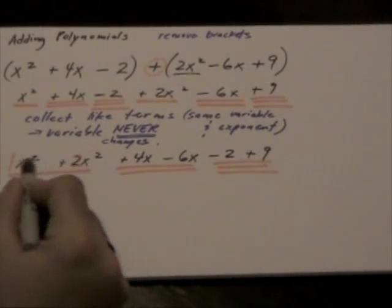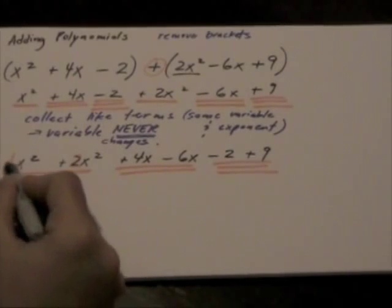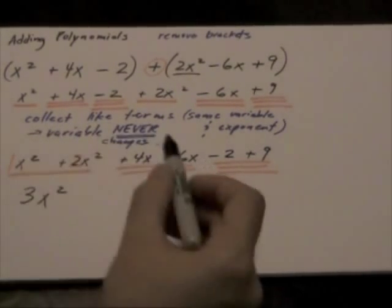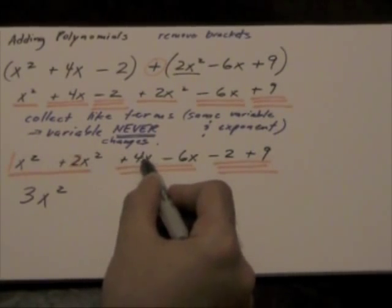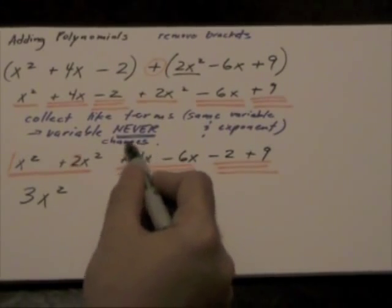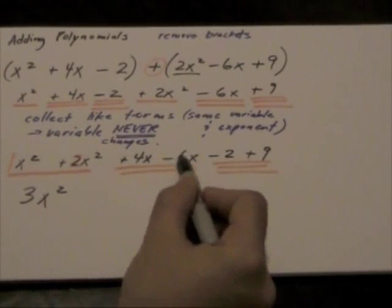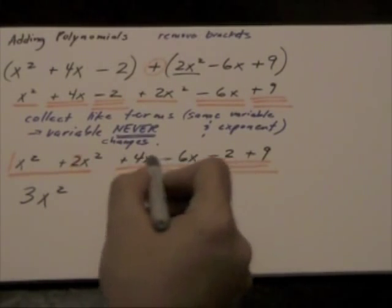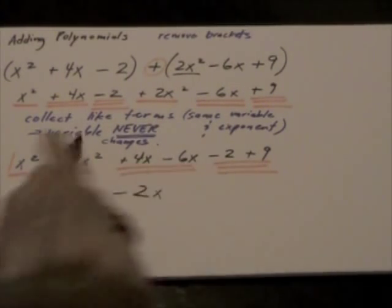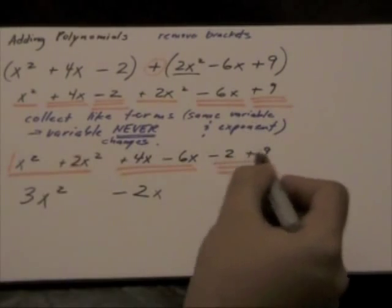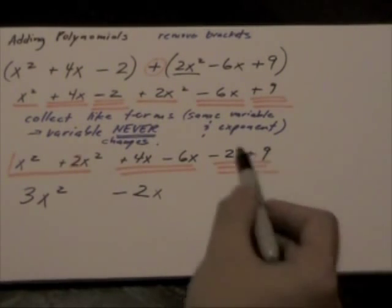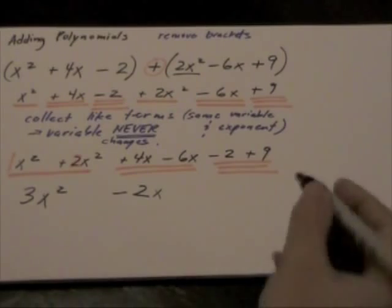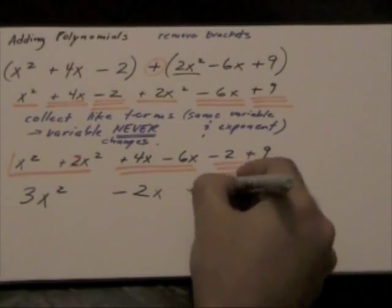So the variable in this expression is x squared. We keep the x squared and we're just adding our numericals. Same thing with our next expression. It's just x. But now we have positive 4 subtracted by 6. It's going to give me a negative 2. But what's the like term in this? It is x. And then here, since they are just numericals, negative 2 plus 9 will just give us positive 7.